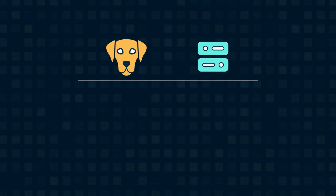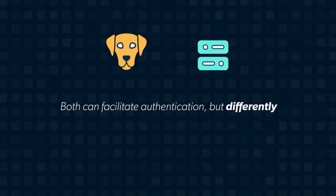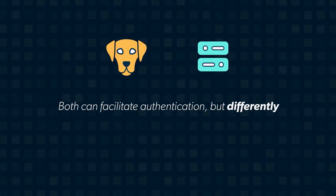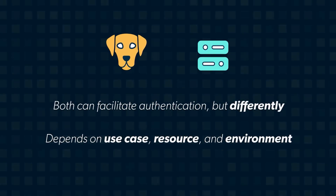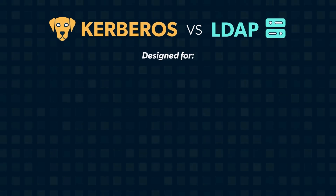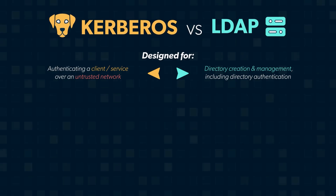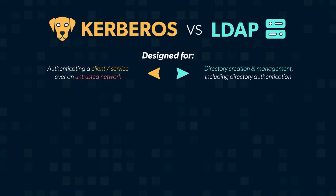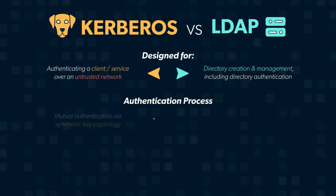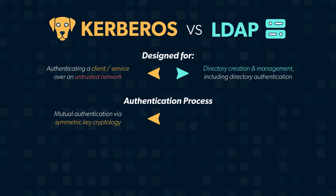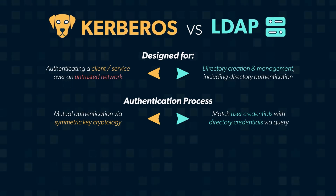In summary, both Kerberos and LDAP can facilitate authentication, but they go about it in different ways and in different situations. The protocol you use usually depends on the use case, the type of resource, and your environment. Kerberos was designed for authentication, while LDAP was designed to be a directory management protocol that can also facilitate authentication. Kerberos cannot be used to manage a directory. Kerberos uses symmetric key cryptography and mutual authentication, while LDAP matches a user's credential input to what's listed in the directory.